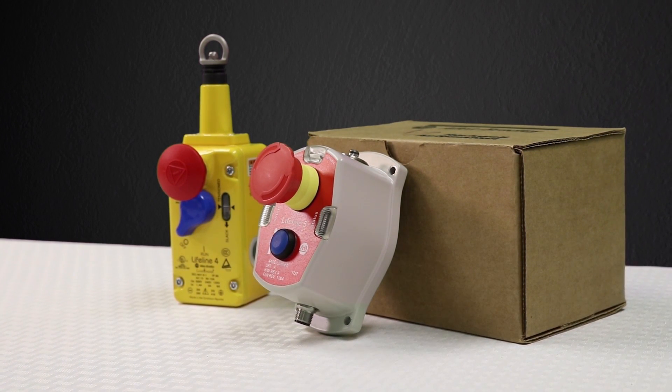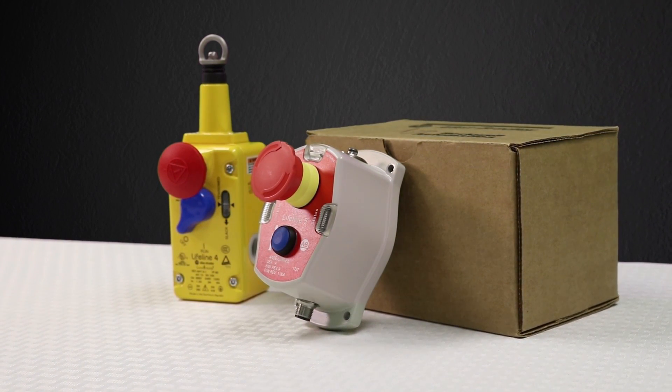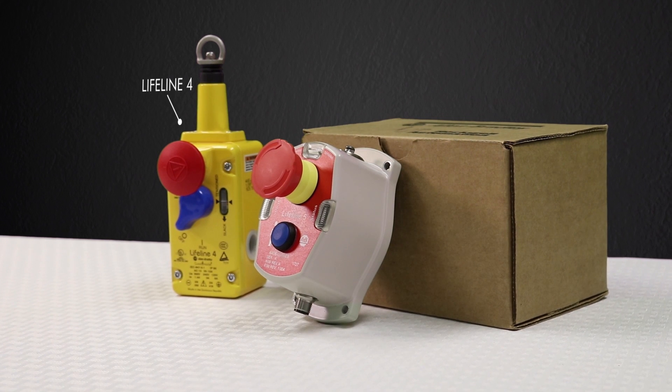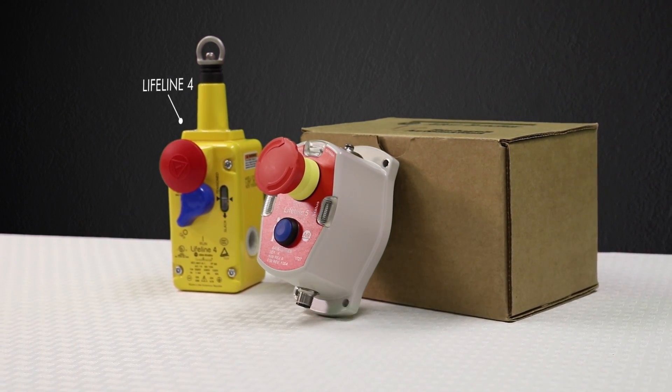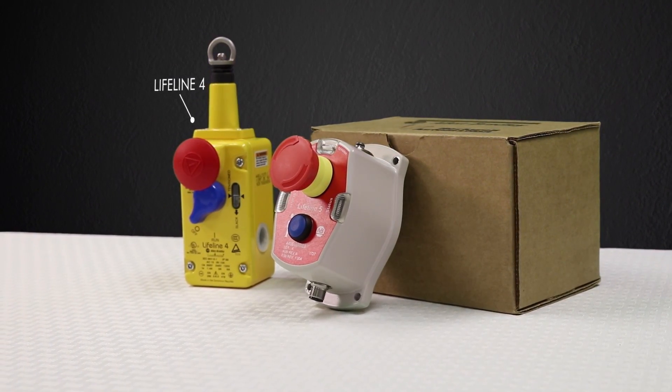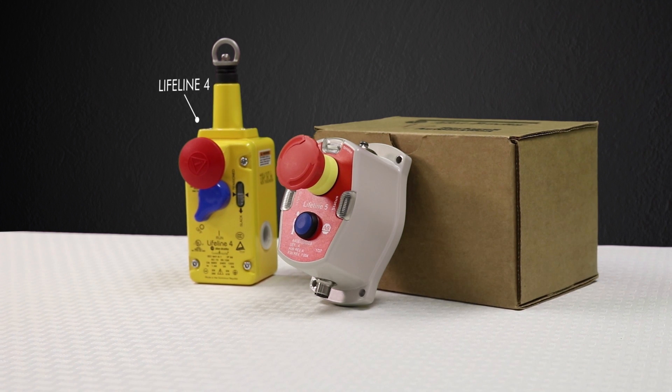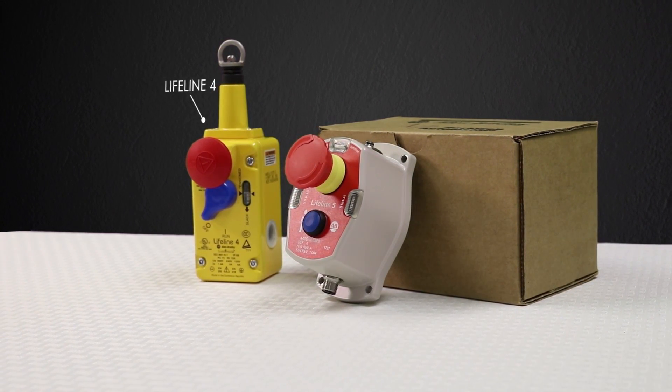These devices use a steel wire rope connected to latching pull switches similar to this Allen Bradley GuardMaster Lifeline 4, so that pulling on the rope at any point will trip the switch to cut off the machine power and stop the hazardous motion.